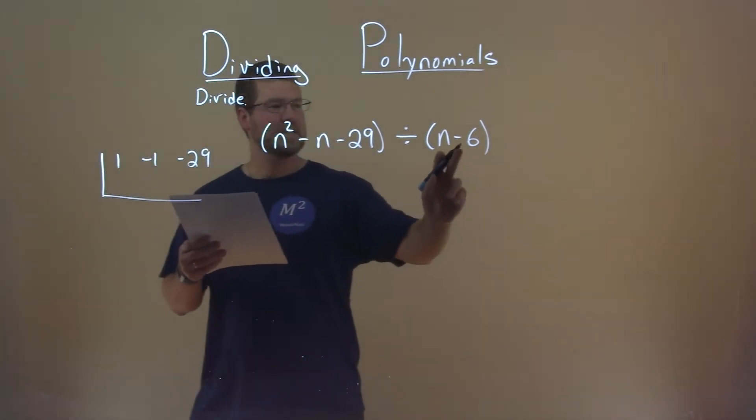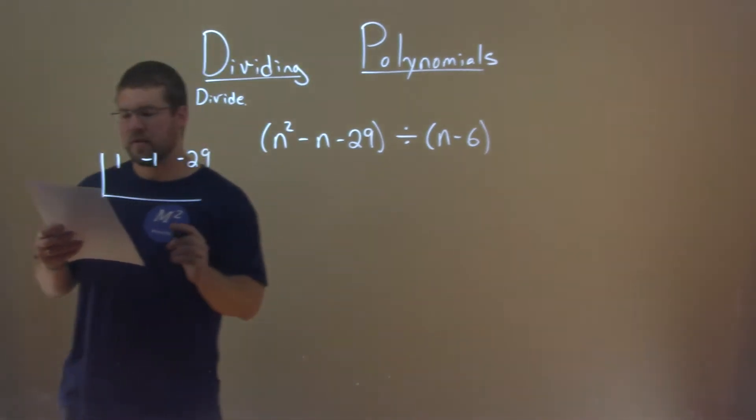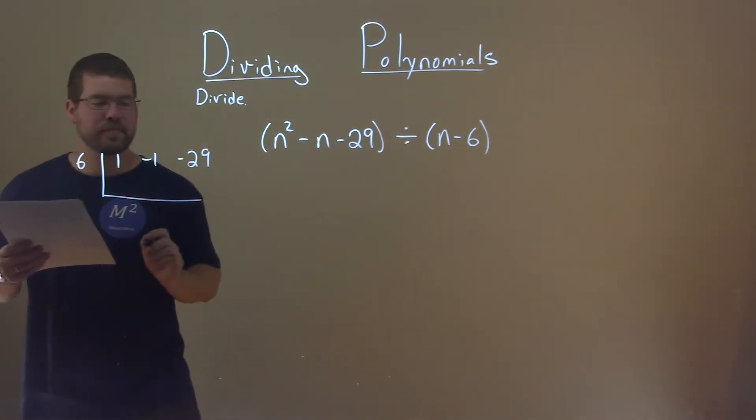We're then going to look at the n minus 6, and we're going to do the opposite of minus 6 and make it a positive 6.